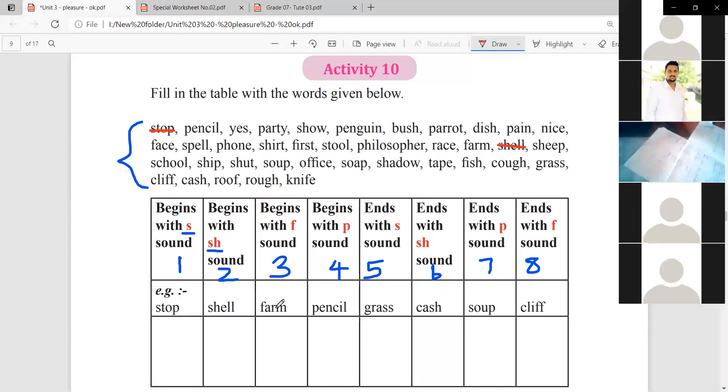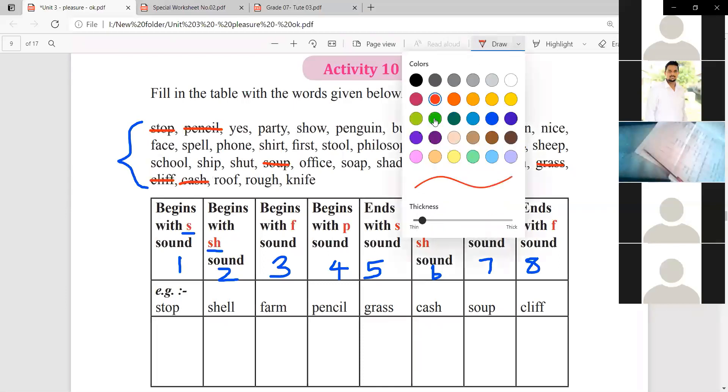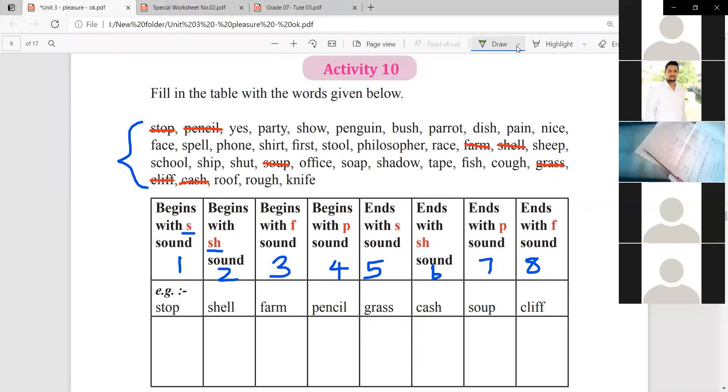Farm - that's correct. Pencil. Grass. Cash. Soup. Cliff. All right.